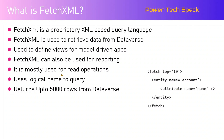FetchXML returns up to 5,000 rows from a Dataverse table as an upper limit. However, there are multiple ways to extract more than that — you can use paging or multiple FetchXML queries to retrieve more than 5,000 rows of records.